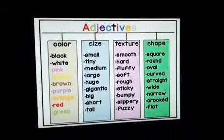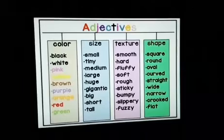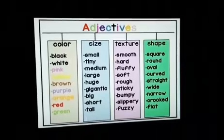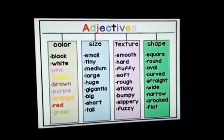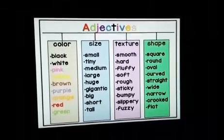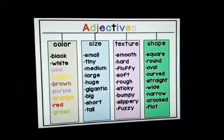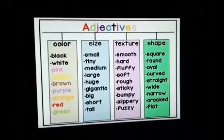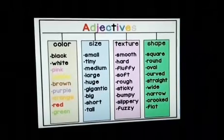For example, color — which color? Black, white, pink, brown, purple, orange, red, green. Size — what size? Small, tiny, medium, large, huge, big, short, tall. What kind of size?